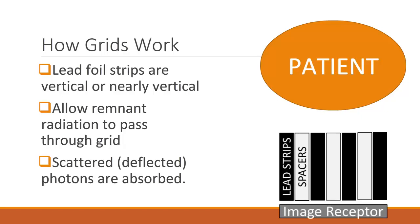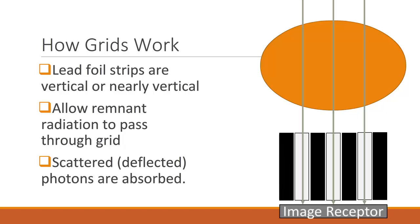The basic principle of how grids work is simple. The lead foil strips are vertical or nearly vertical to match the path in which the x-rays should travel to the image receptor. The radiolucent spacers allow the remnant x-rays — those that have passed through the patient — to reach the image receptor unobstructed, while the scattered x-ray photons, which have been deflected in all directions, are absorbed by the thin foil lead strips and prevented from reaching the image receptor and degrading the resulting image. Please note that the image here is not to scale and only meant to demonstrate the principle of how a grid works.